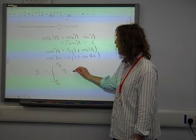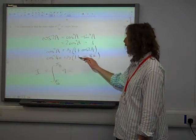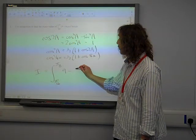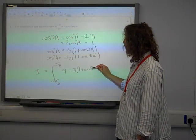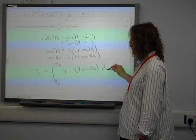So 9 take away 6 times a half of 1 plus cos 8x. So that's 3 times 1 plus cos 8x dx.